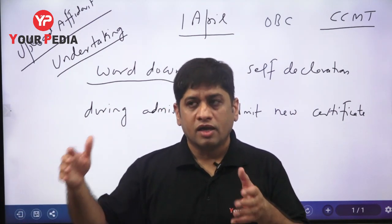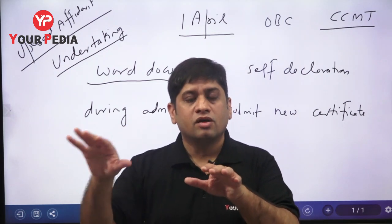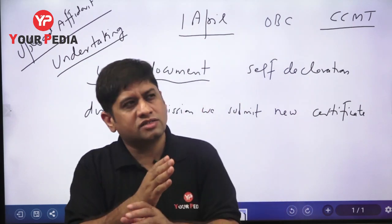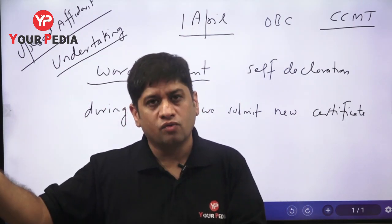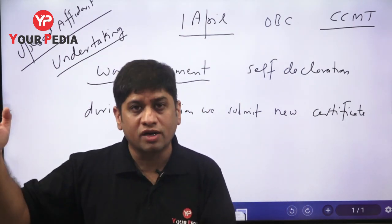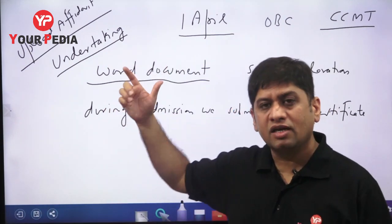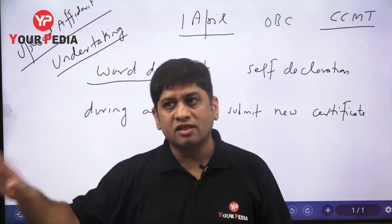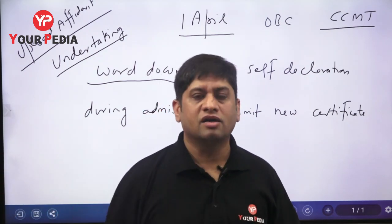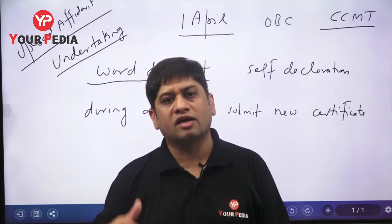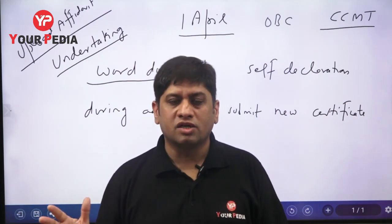It is a word document in which you will type that you have an OBC certificate dated, let's say, September 2021, and you have applied for renewal of the OBC certificate which will take one week. Till that time, you are submitting your earlier OBC certificate and declaring that you will provide the new certificate.